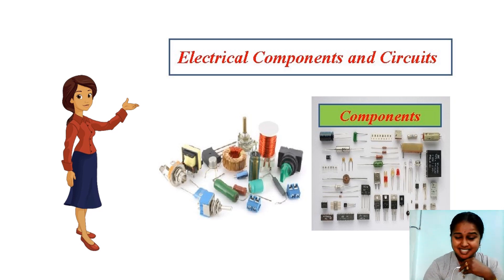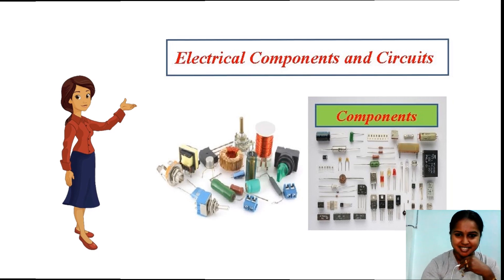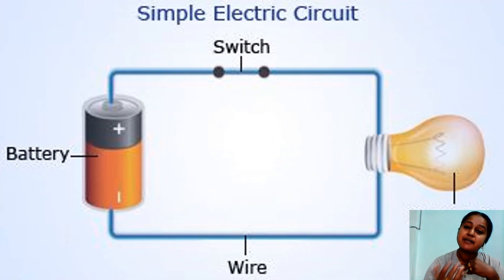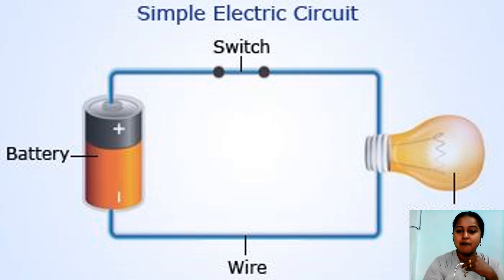Do you know what are the electrical components in an electric circuit? There are four main components in one electric circuit. Let's look at what they are and their functions. This is a simple electric circuit. You can see: this is the switch, this is the bulb, this is the connecting wire, and this is the battery — or you can also call it a dry cell. Do you know the functions of these electrical components?